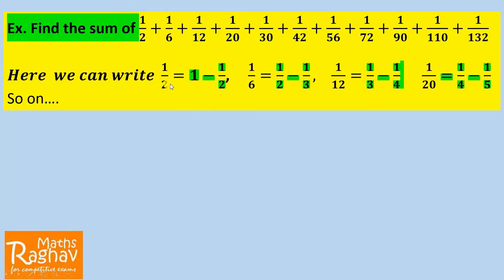First, the term 1/2 can be written as 1 minus 1/2. Similarly, 1/6 — since 6 = 2 × 3 — can be written as 1/2 minus 1/3. Next, 1/12 — since 12 = 3 × 4 — can be written as 1/3 minus 1/4. And 1/20 can be written as 1/4 minus 1/5.